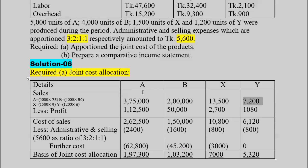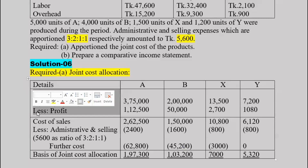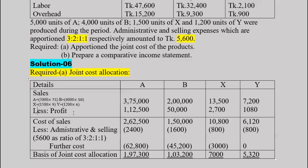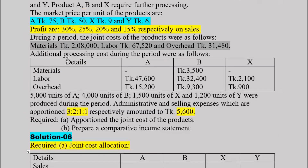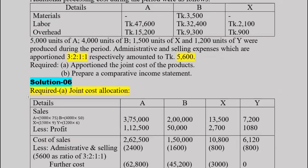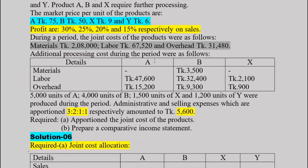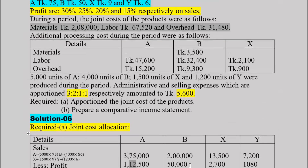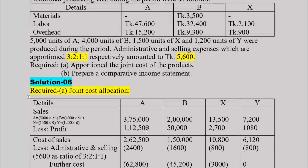To find the profit, we use the profit rates: 30% for A, 25% for B, 20% for X, and 15% for Y. Using these percentages on sales gives us the profit for each product in the allocation table.